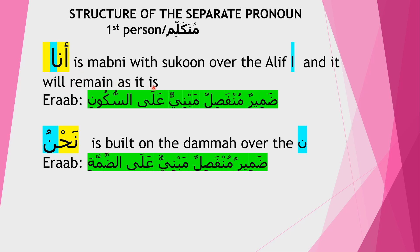Even though ana comes in the position of mubtada, the structure — hamza, nun, and long alif with sukun — is fixed. You cannot say there should be a damma over the alif; the structure remains as it is. Whenever it comes in an ayah, you explain it in i'rab as: damirun munfasilun mabniun ala sukun. The pronoun nahnu is mabni with damma over the nun. Even if it comes in the position of mubtada or any other position, the last letter — nun with damma — will not change. Its i'rab is: damirun munfasilun mabniun ala damma.